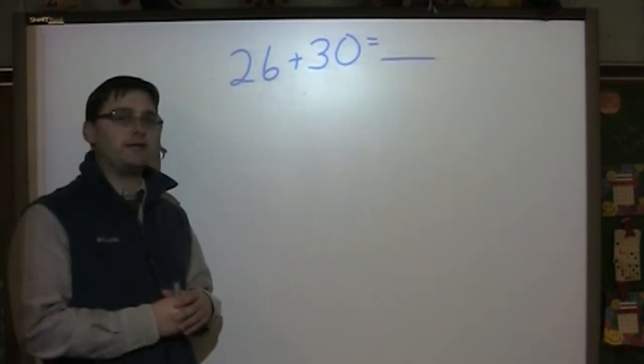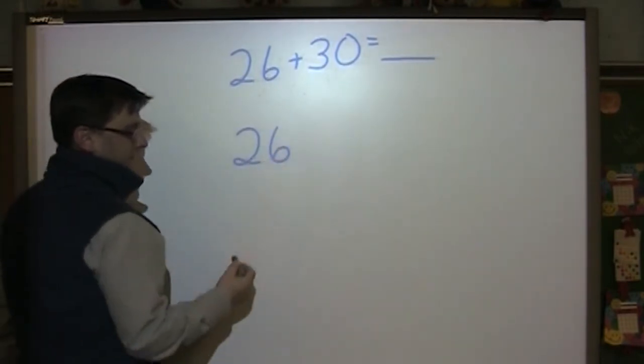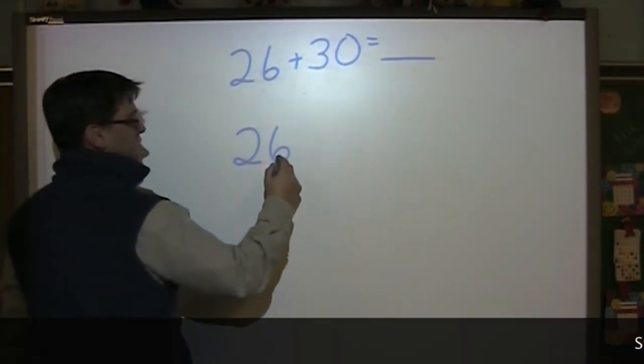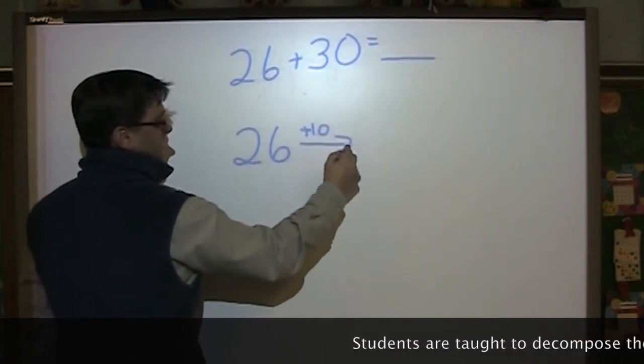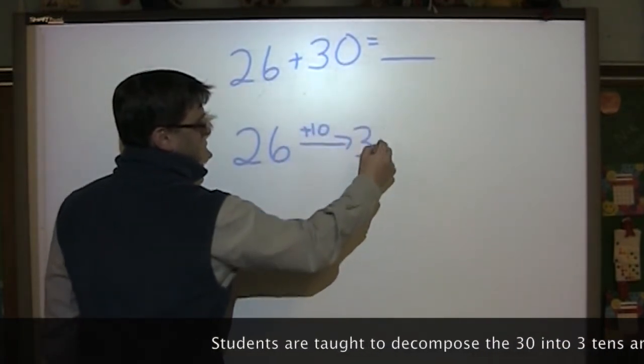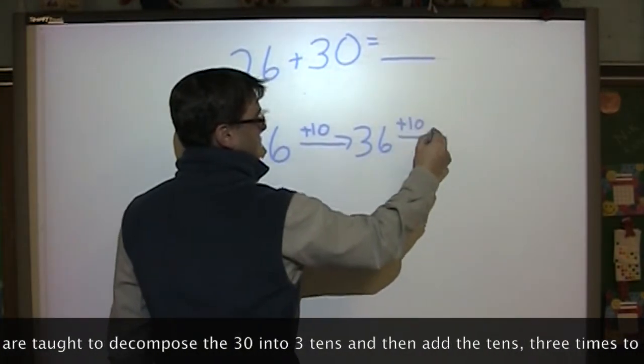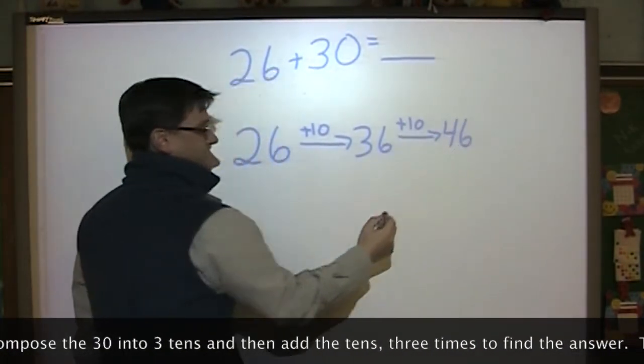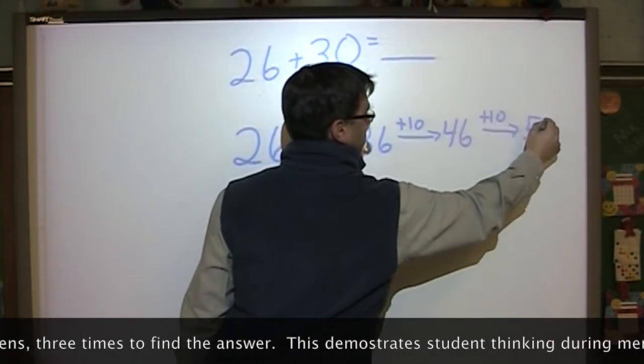Now I'll show you the arrow way with 26 plus 30. Two different ways we can do this. We can break it into smaller steps and do 26 arrow plus 10 equals 36, arrow plus 10 equals 46, and then arrow plus 10 equals 56.